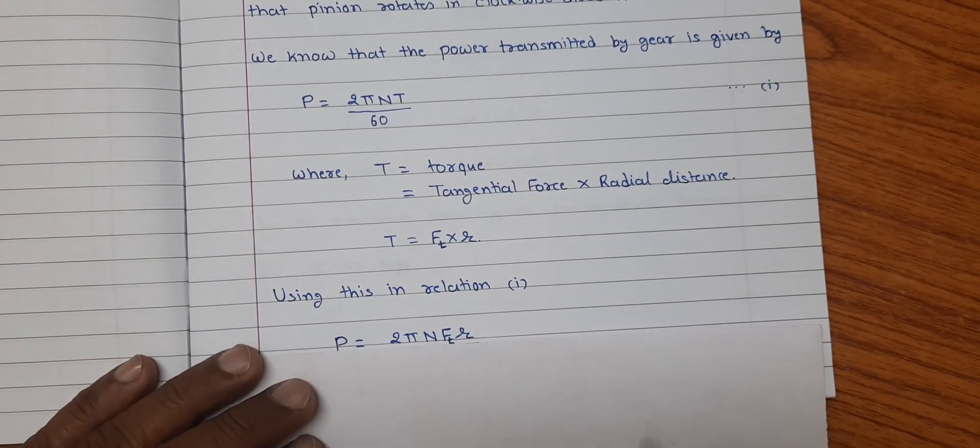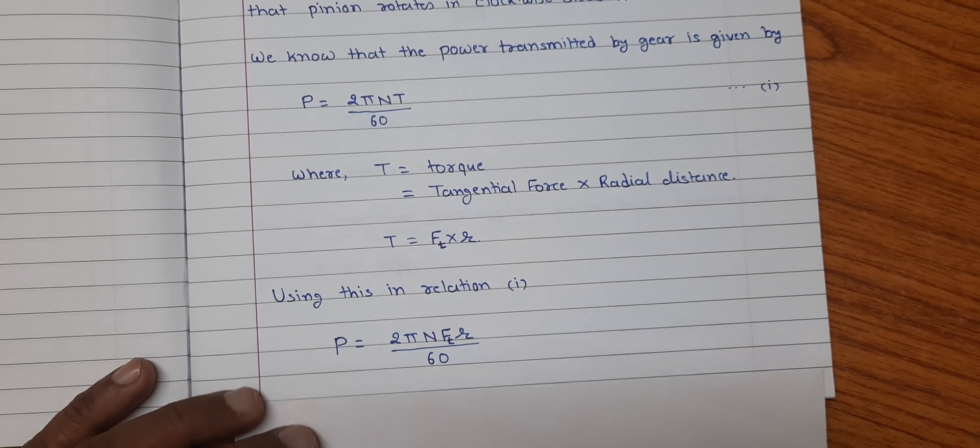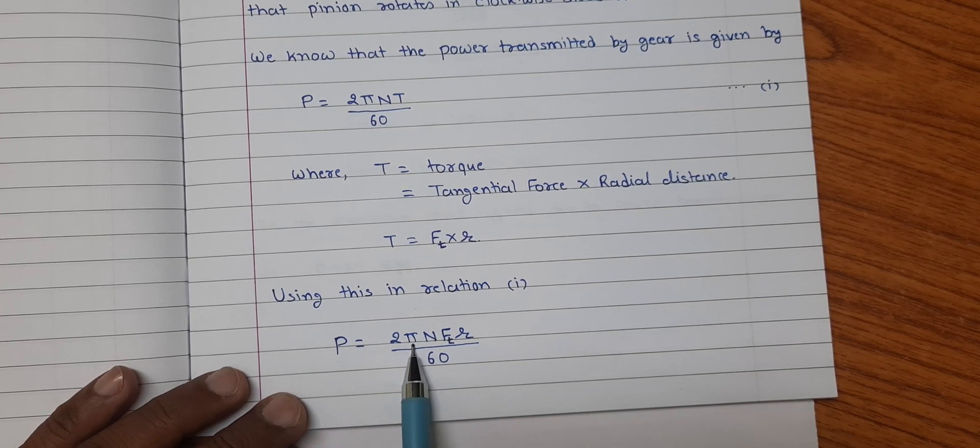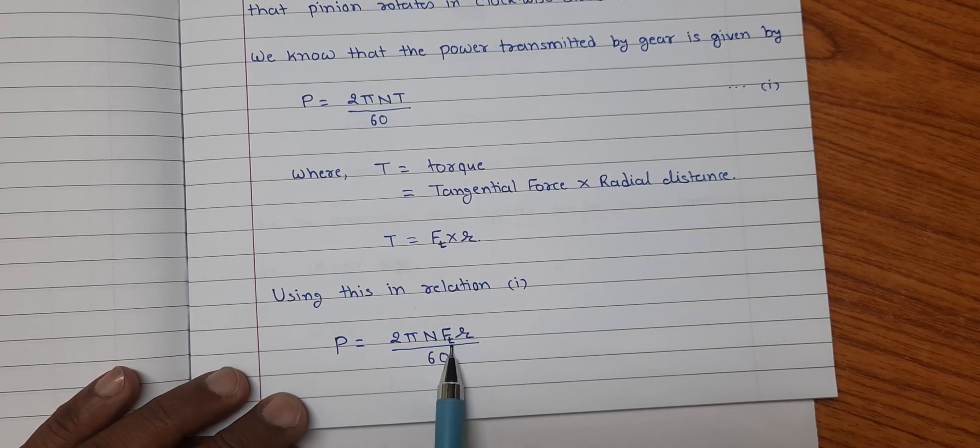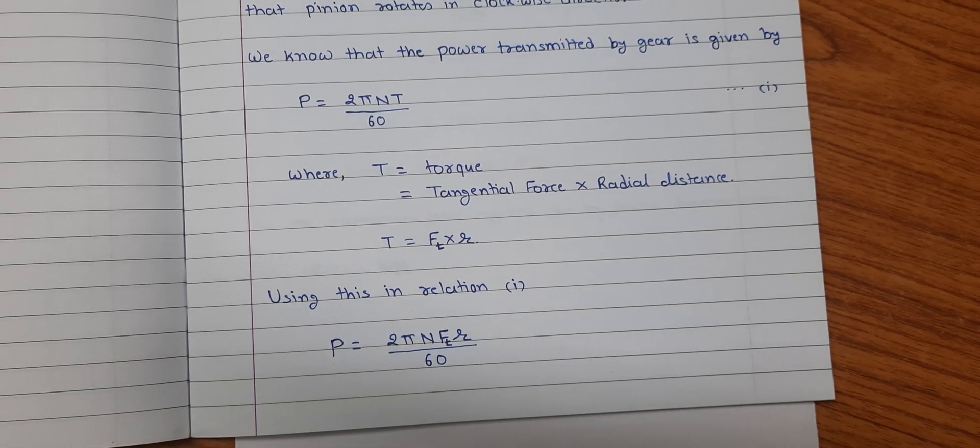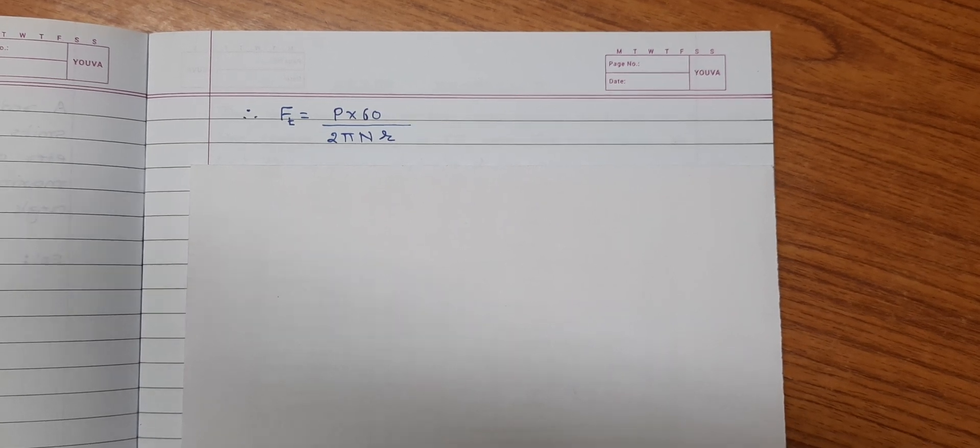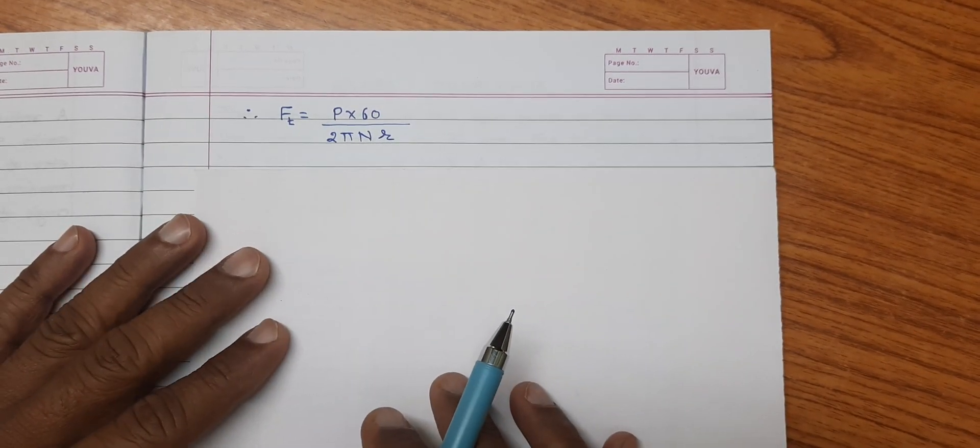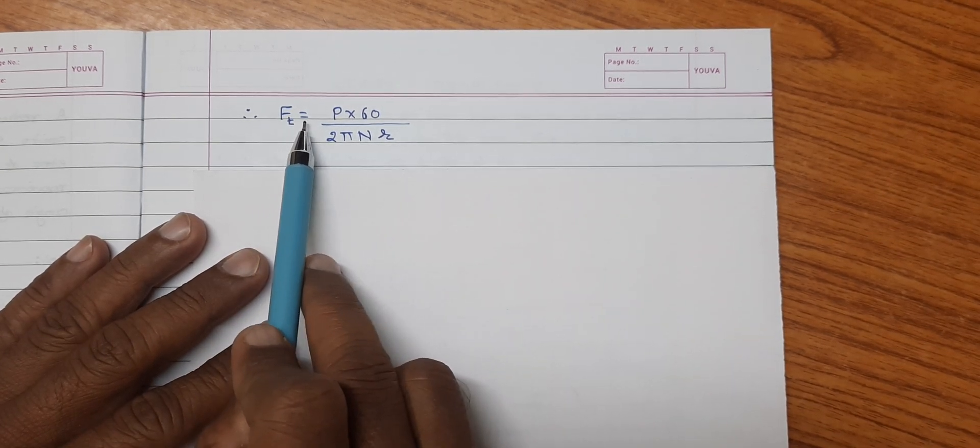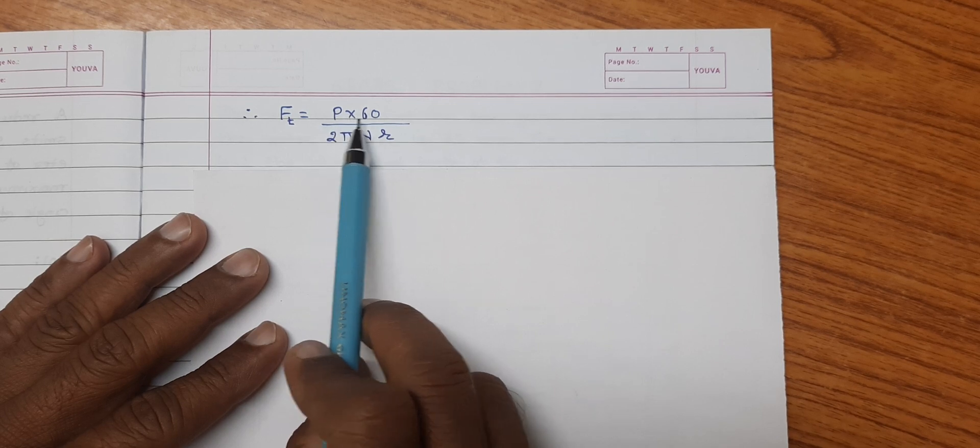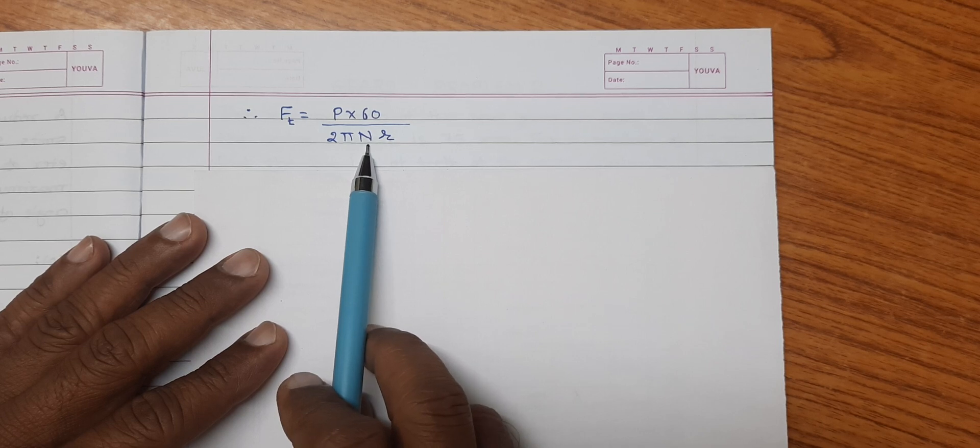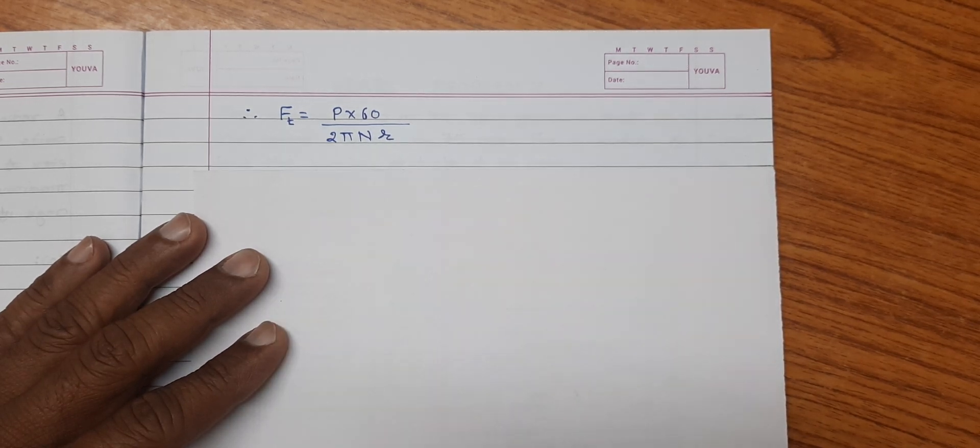Using this in relation 1, we can write that power transmitted P is equal to 2πN ft into r divided by 60. So rearranging the terms, we found tangential force ft is equal to power transmitted P into 60 divided by 2πN, that is speed of pinion, into r, radius of pinion.